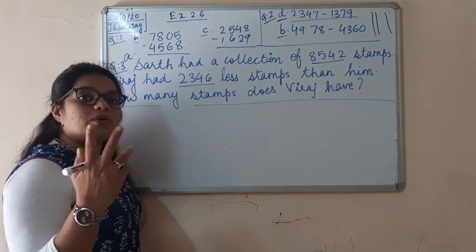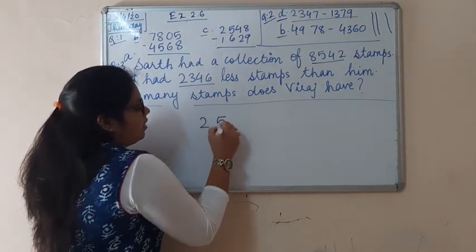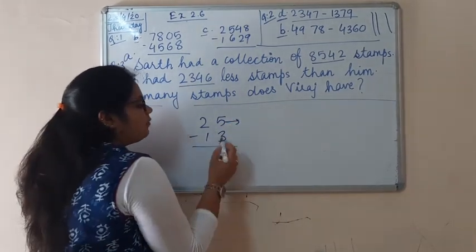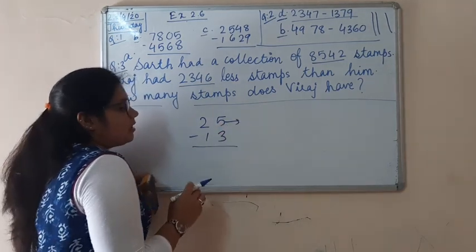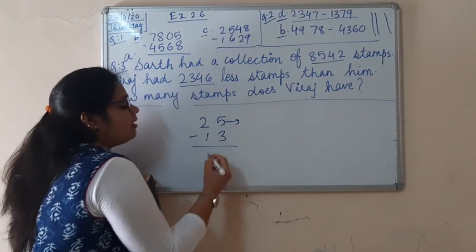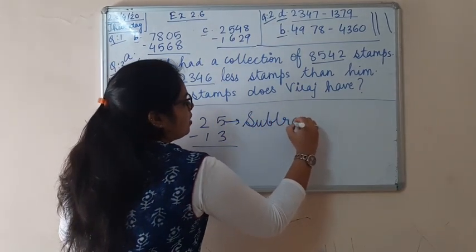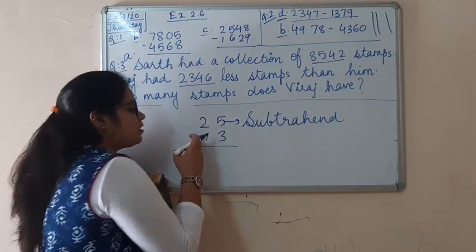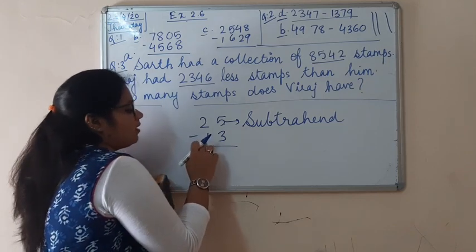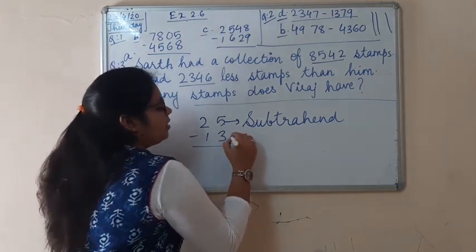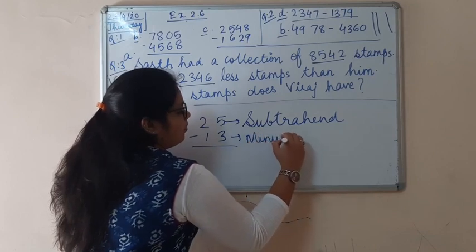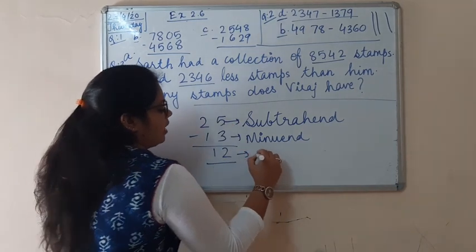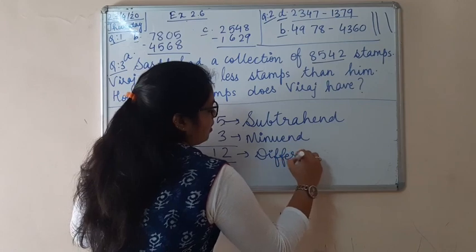Suppose you are given two numbers of subtraction: 25 minus 13. Now what is 25 called? 25 is the number from which we are subtracting 13. The number which we are subtracting from is known as the subtraction. And the number which we are going to subtract — minus 13 — that is known as the minuend. And the answer we are getting is known as the difference.